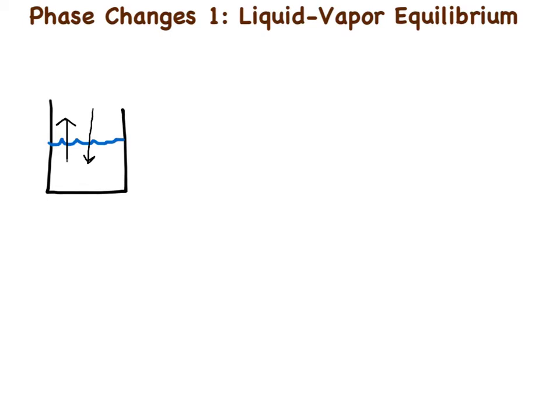So what exactly does evaporation mean, or changing the phase? Everybody knows that in order for water to evaporate or to boil, it has to be at 100 degrees Celsius. But what happens if you take a cup of water and spill it on the desk in front of you? If you came back a week later, the water would be gone because it would have evaporated — but the room didn't reach 100 degrees Celsius. So how did that water evaporate?